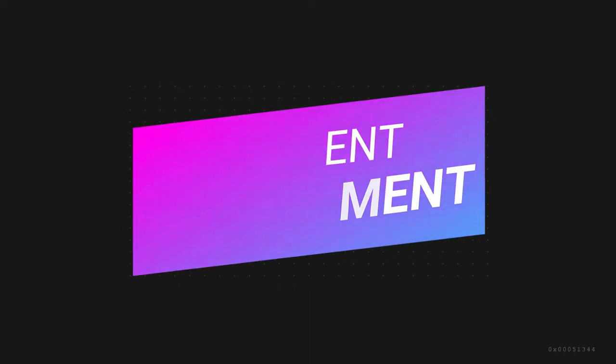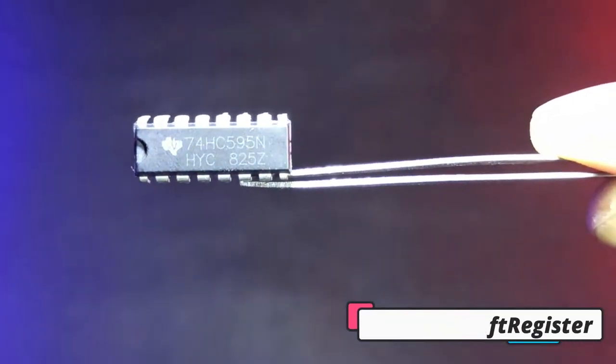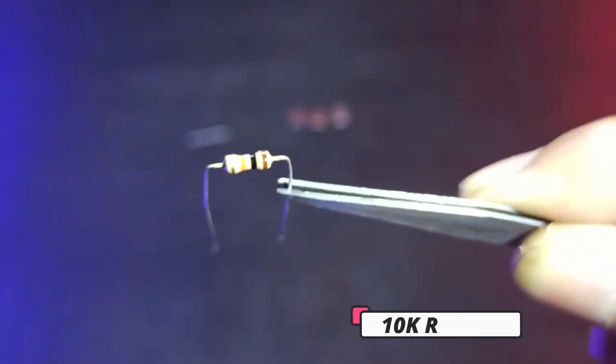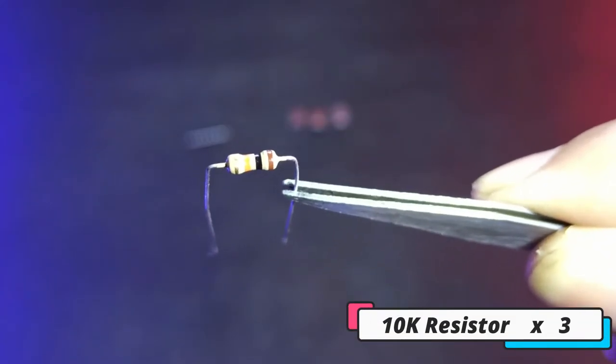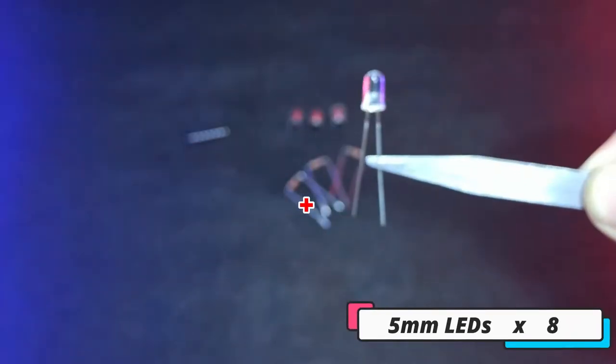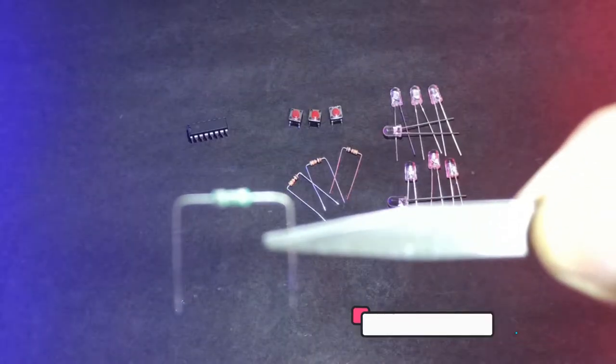To build this LED controller, we require shift register 74HC595 for controlling the LED, three pull buttons to control the shift register, four 10K resistors to reduce electronic noise from buttons, eight LEDs as output, and eight 220 ohm resistors to protect the LEDs.